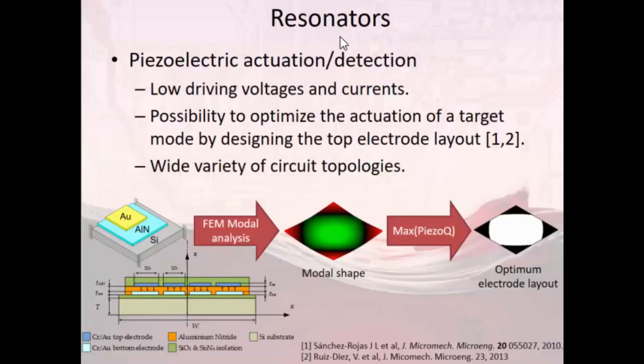So our solution for tracking this process is to use a piezoelectric resonator. Piezoelectric actuation and detection is very convenient for low driving voltages. You have the possibility to design the resonator for different resonant modes and optimize the electrode for detecting a particular target mode. And also, it's very straightforward to design different circuit topologies to implement the complete system.